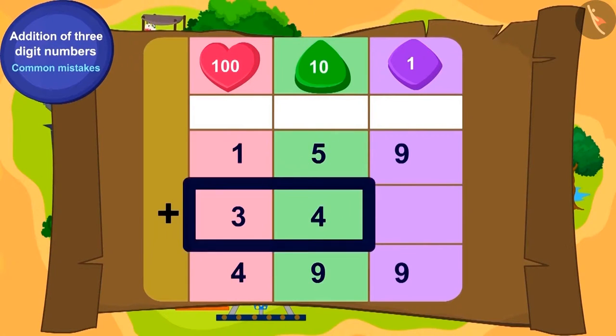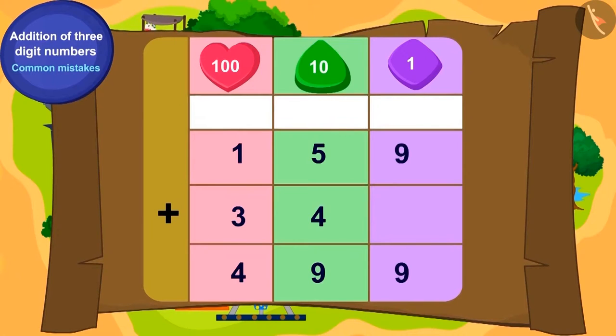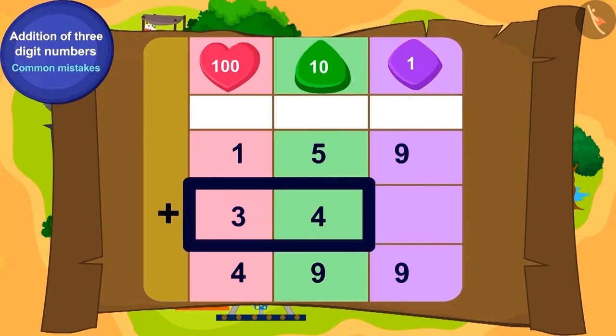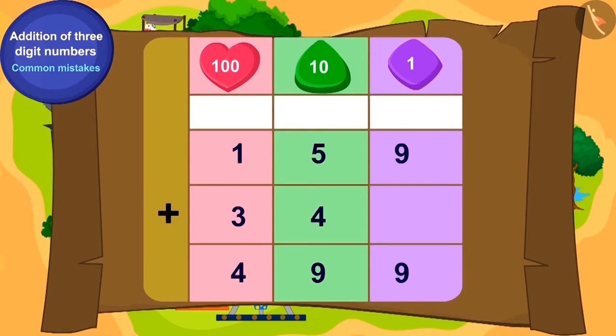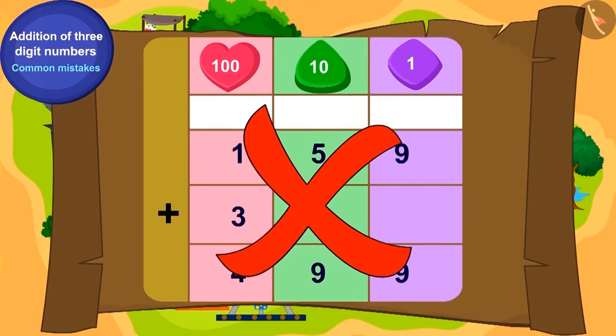While writing 34 using the place value method, by mistake, 3 of 34 is written in place of hundreds instead of tens and 4 is written in place of tens instead of ones. Therefore, this addition is incorrect.